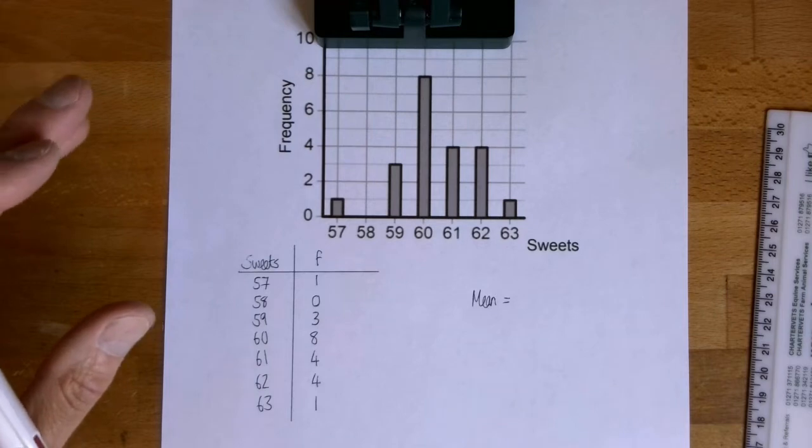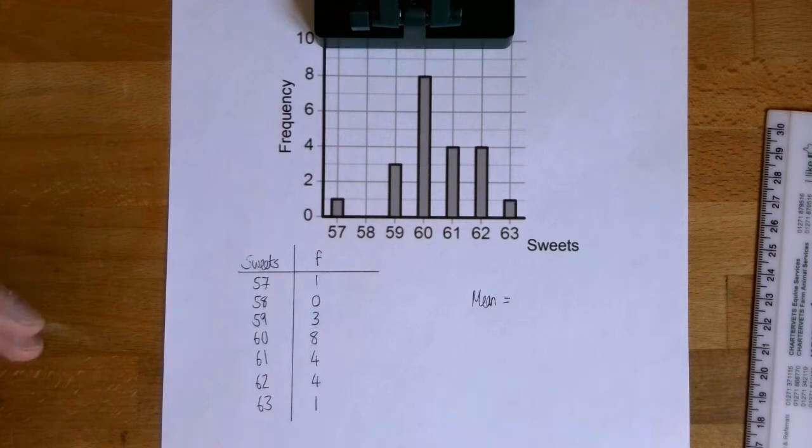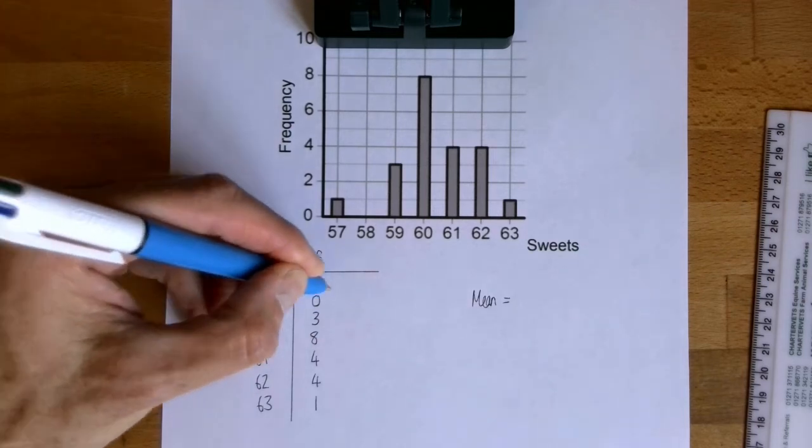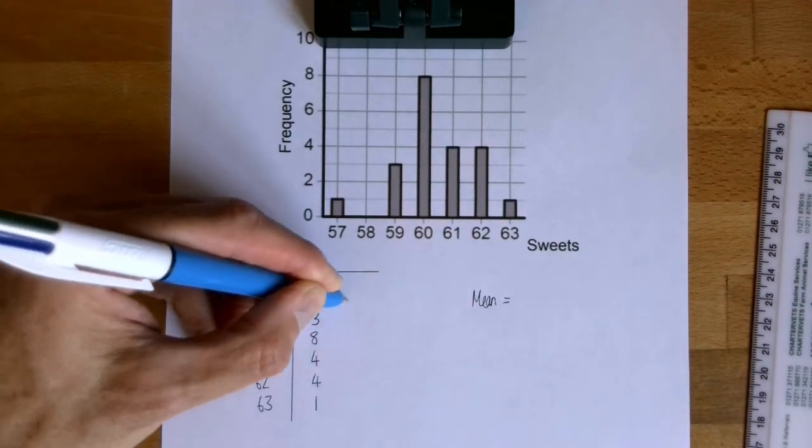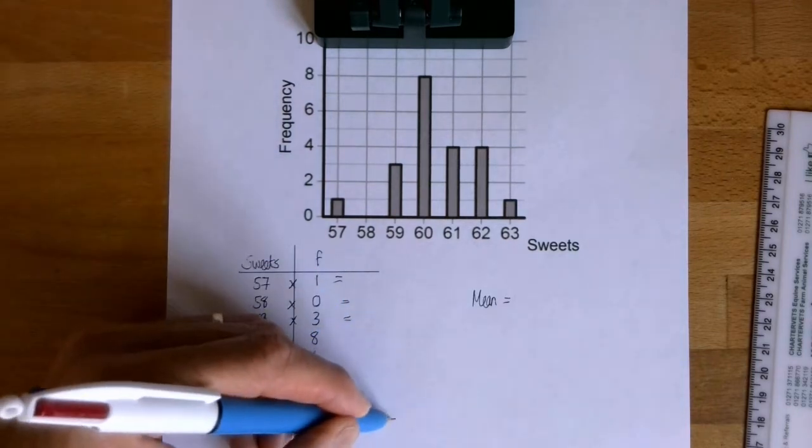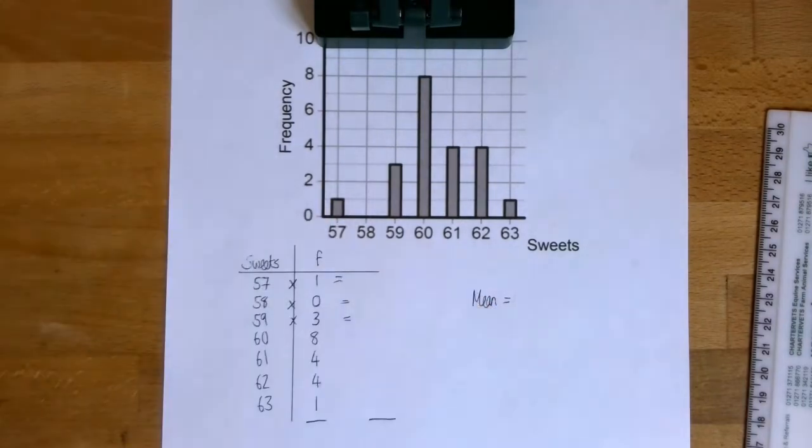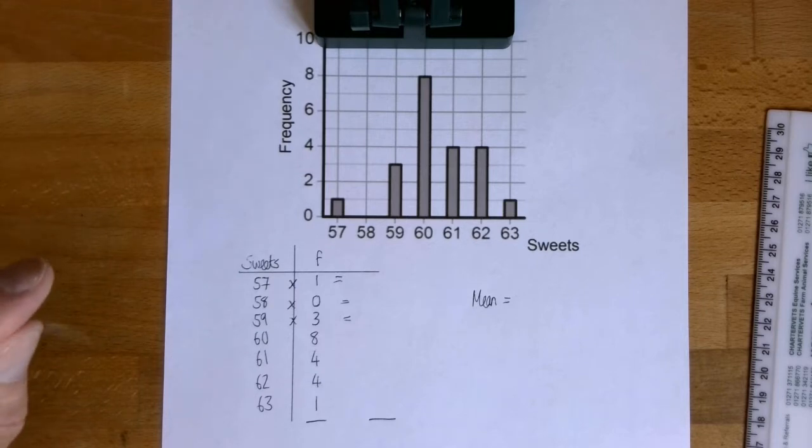I've got number of sweets 57, 58, 59, 60, 61, 62, and 63. And I've got frequency. I've just taken the height of each bar and put it into my frequency distribution. Now I hope you'll remember the technique for working out the mean. We need to add up all the sweets in all of these packets, but the quick way to do it is the multiplication trick.